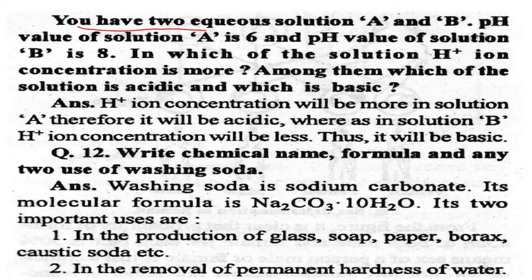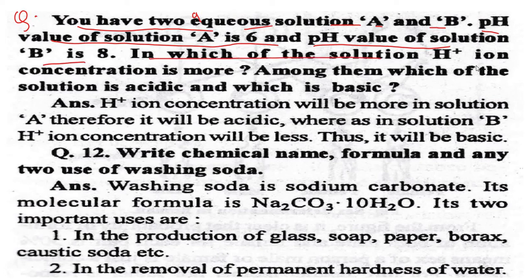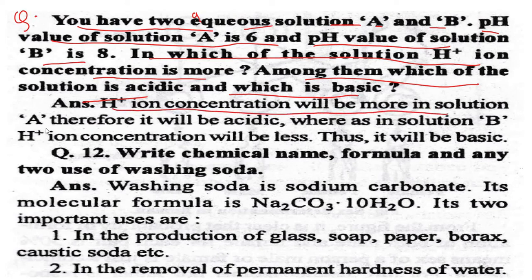You have two aqueous solutions A and B. pH of solution A is 6 and pH of solution B is 8. H⁺ ion concentration is more in solution A, therefore it is acidic. In solution B, H⁺ ion concentration is less and it is basic.